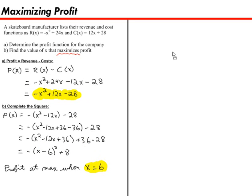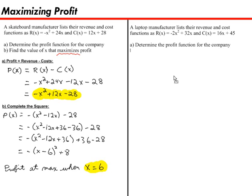Alright, let's see if you can make a company a lot of money. Try the same steps I showed you on the left with this problem. A laptop manufacturer lists their revenue and cost functions as R(x) is equal to negative 2x squared plus 32x, and the cost function is C(x) is equal to 16x plus 45. In part A, determine the profit function for the company, and then in B, find the value of x that maximizes their profit. Try that one now.